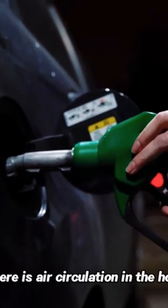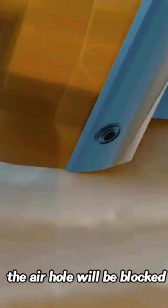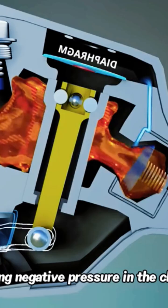During this process, there is air circulation in the hole at the head of the gas tank and in the pipeline. Once the gas tank is full, the air hole will be blocked, creating negative pressure in the chamber.